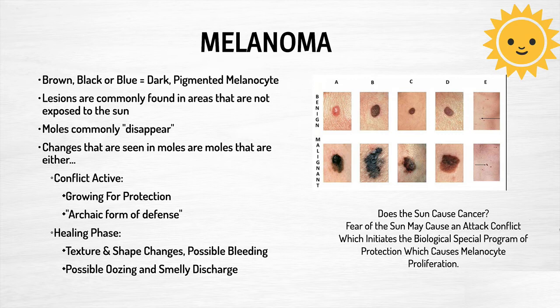A person can indeed have an attack conflict because of the sun, because we have this concept that the sun is dangerous and causes cancer. If you feel you spent too much time outside, or someone starts mentioning it and you get worried, that can definitely induce an attack conflict, which would proliferate the melanocytes and cause the problem you were worried about. During conflict activity, the melanocytes are proliferating for protection — it's an archaic form of defense, these little shields that our body makes to protect us.